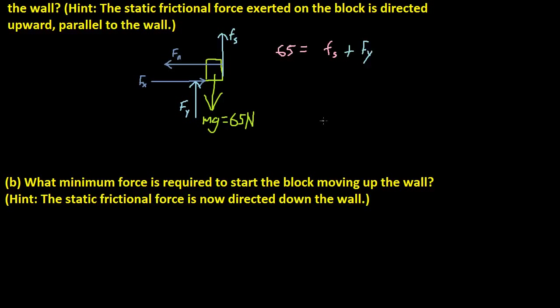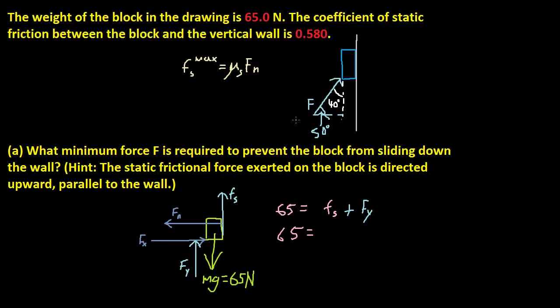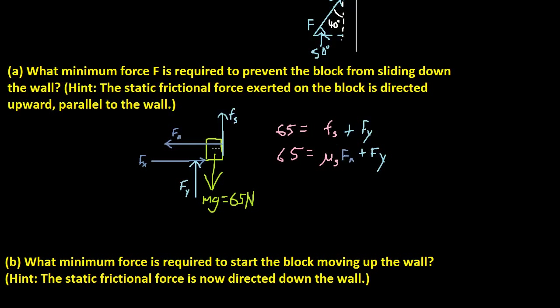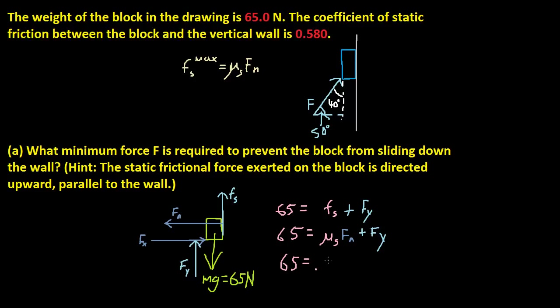So how do we figure out what Fs is? Fs is the coefficient times the normal force, so coefficient times the normal force plus Fy. I just substituted this into here. Now let's rewrite this with numbers. 65 is equal to 0.580, so just 0.58.